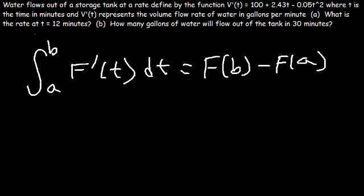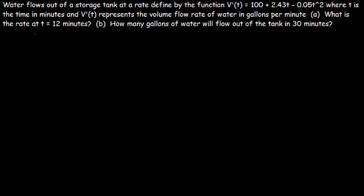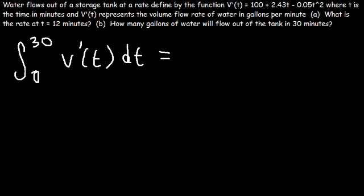So if we integrate the volume flow rate or the rate of change of volume with respect to time, if we integrate that function from 0 to 30, it's going to give us the number of gallons of water that's going to flow out of the tank in the first 30 minutes. So we need to integrate from 0 to 30, v'(t). And this is going to be equal to v(30) minus v(0).